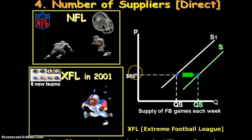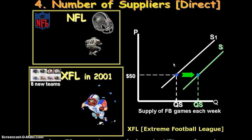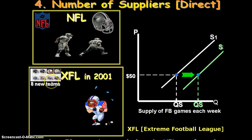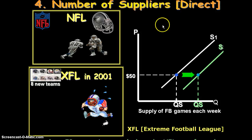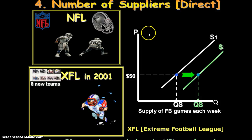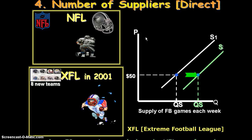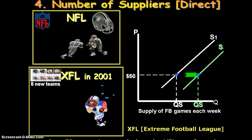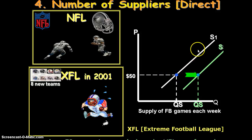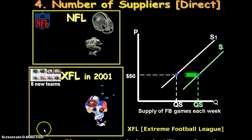Another reason you might see more supply in the market of a particular good, even if the price doesn't change, is directly related to the number of suppliers. For instance, back in 2001 the XFL was formed, adding eight new teams into the market for football games you could possibly watch. The number of suppliers has a direct impact on supply. A more local example would be shovels — if a new Home Depot or Lowe's was built in the area, there would be a higher supply of shovels. Price is not changing, but you're supplying more due to the fact that there are just more producers.